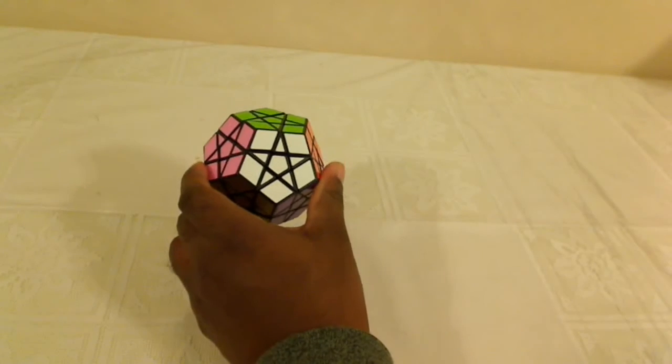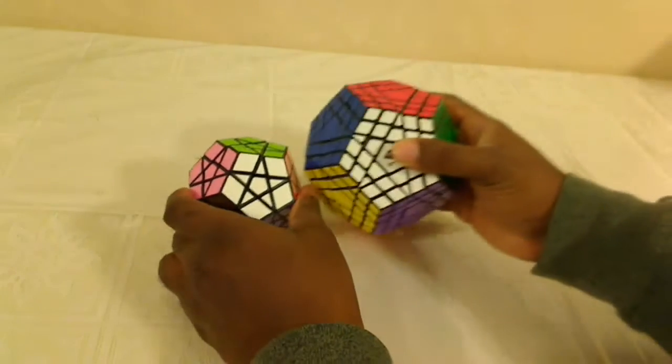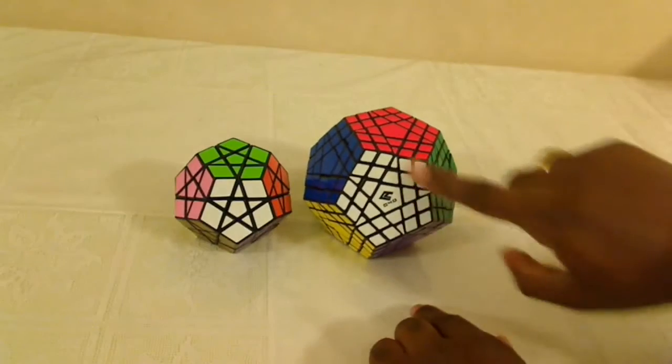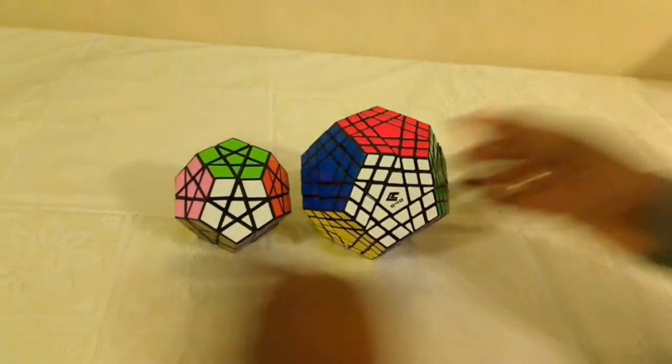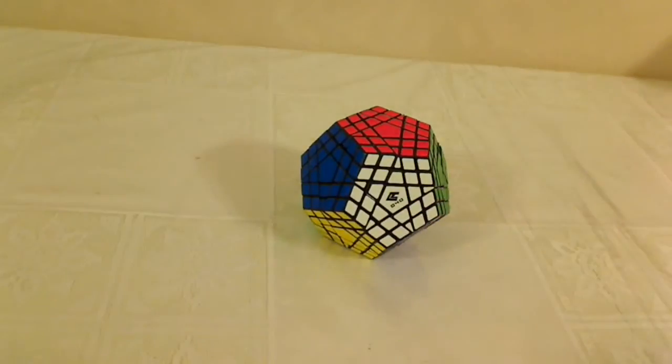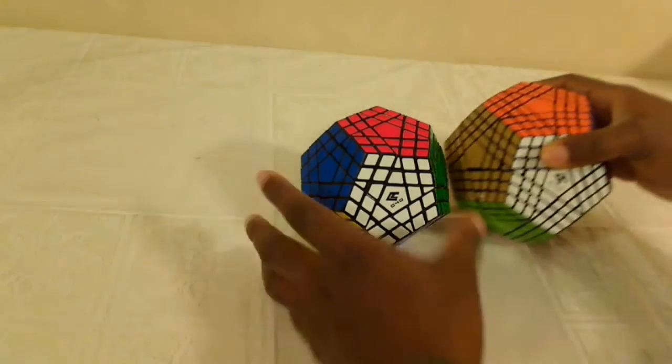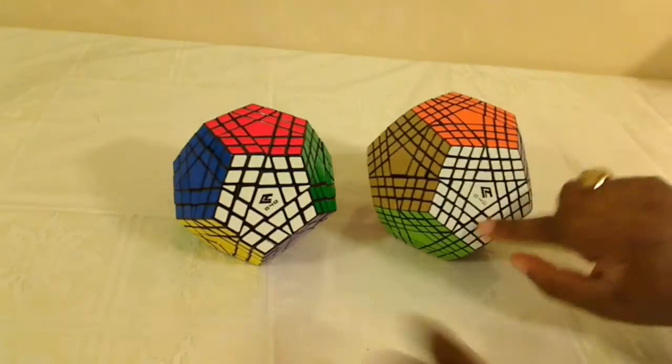The Cube4U company has released a puzzle called the Gigaminx, which adds two layers around the centerpiece. But they didn't stop there. They decided to go a little bit further and released a puzzle called the Terra Minx. And the Terra Minx has three layers around the center.